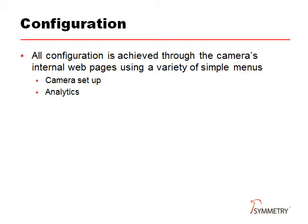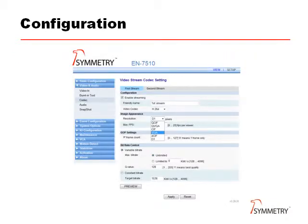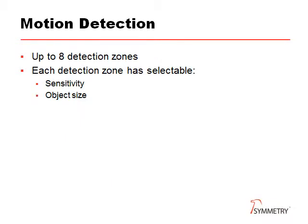Configuration is very simple using the camera's internal web pages, with a variety of graphical techniques and simple menus. We will see some of these configuration screens as we go through the webinar. Here, for example, you can see the codec configuration page showing the resolution being changed from D1 to VGA. Motion detection is available as standard across the range.